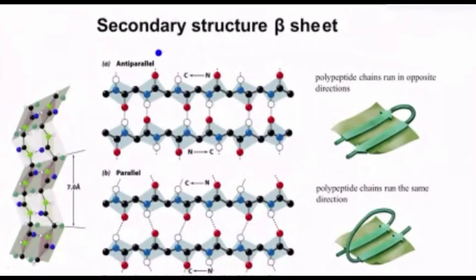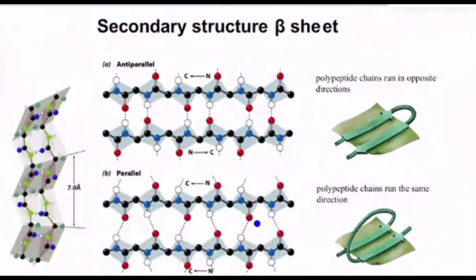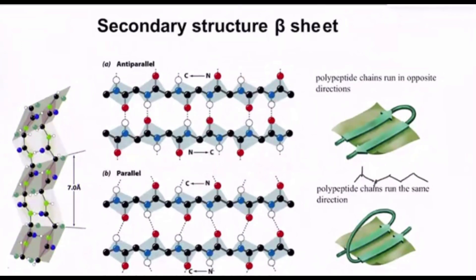Secondary structure. In the secondary structure beta sheets, the key difference between anti-parallel and parallel beta pleated sheets is that in the parallel beta pleated sheets, polypeptide strands run in the same direction. If you see the structure, the structure looks like this. So they run in the same direction.